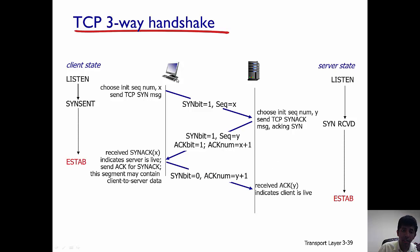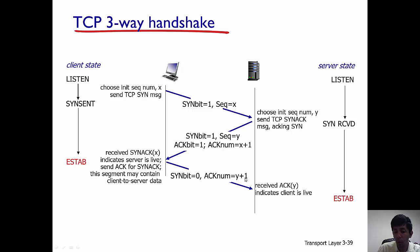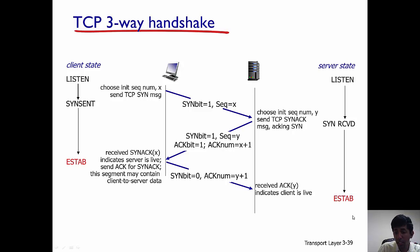When the client receives this message, the connection is established from the client's perspective. The client then sends another message back to the server in which it sets the SYN bit equal to zero and the acknowledgement number to Y plus one, because the sequence number in the server's segment was Y. When this segment is received by the server, the connection is established at the server as well. After this three-way handshake, the client and server can send data to each other.